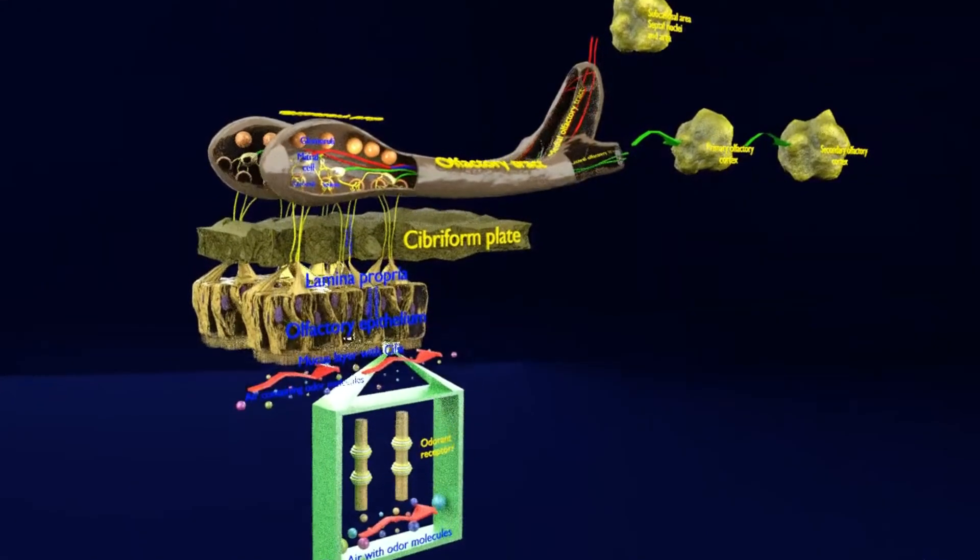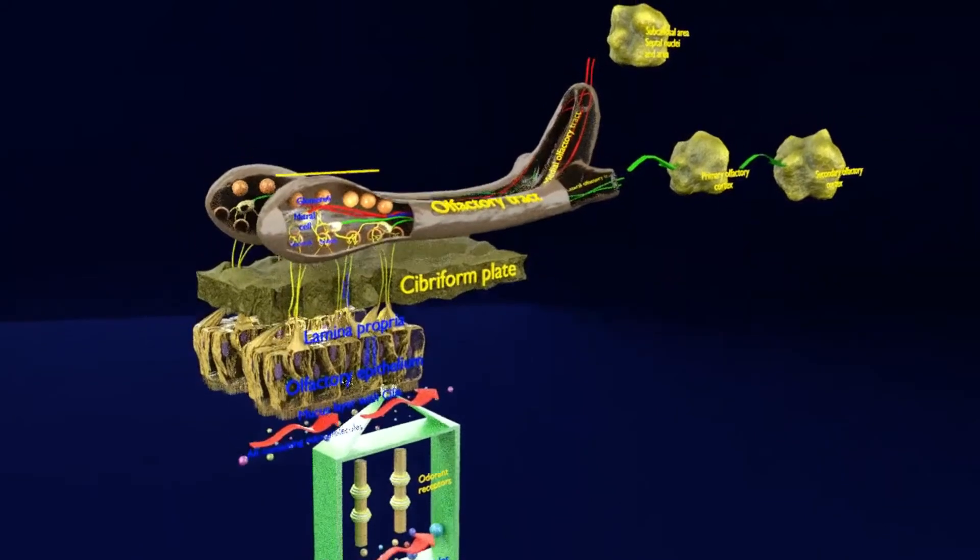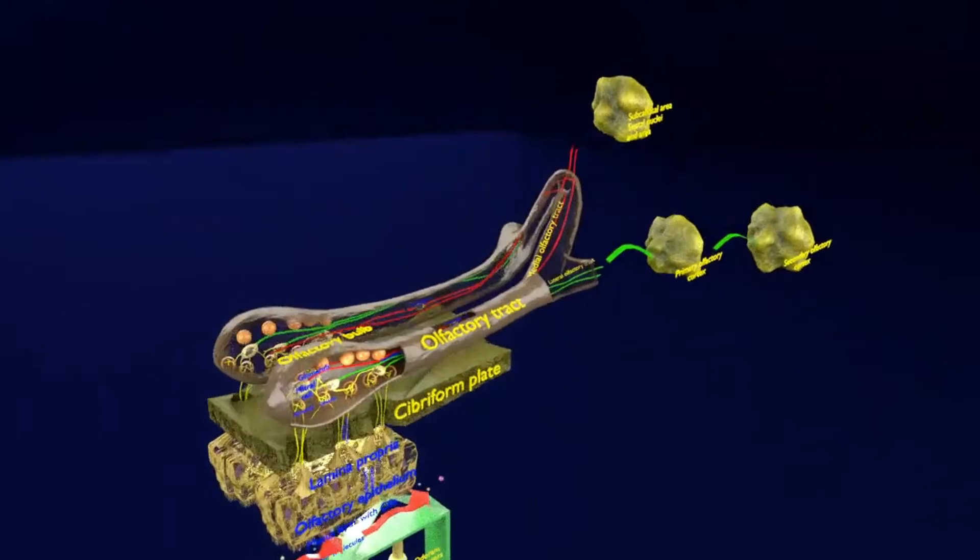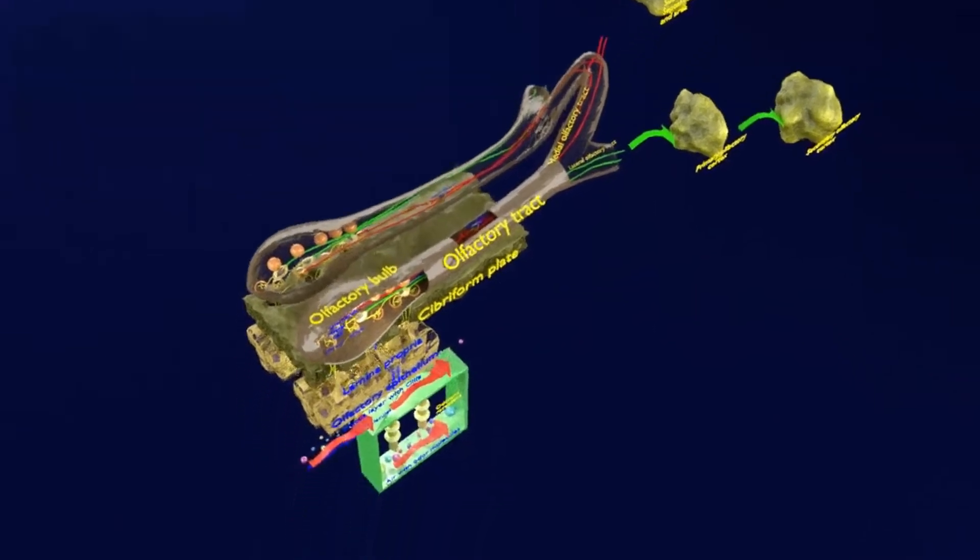The primary olfactory cortex as you will later see includes mainly the anterior olfactory nucleus and the piriform cortex. The secondary olfactory cortex is the orbitofrontal cortex.